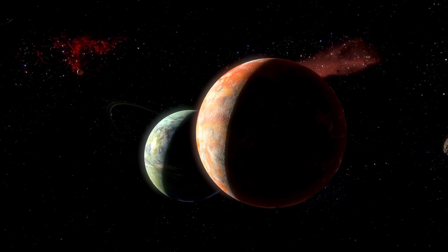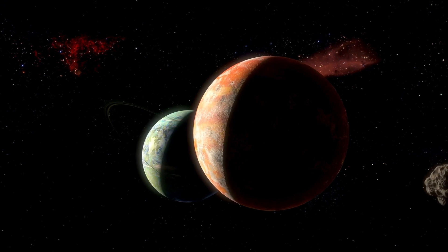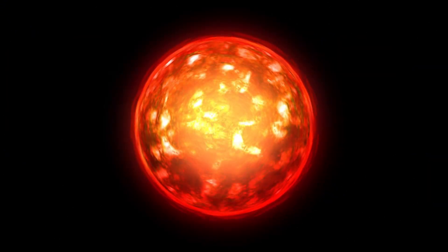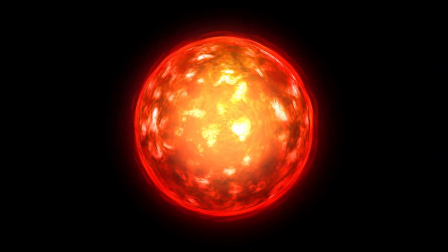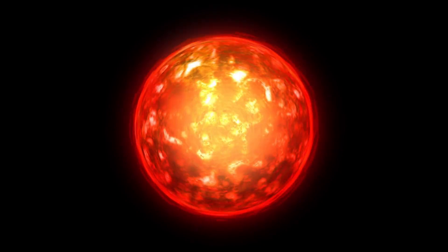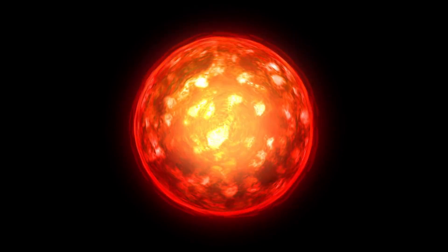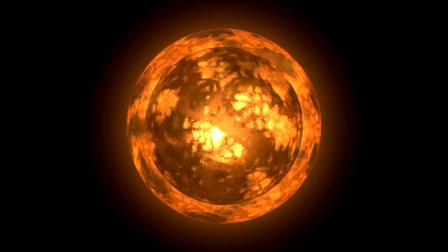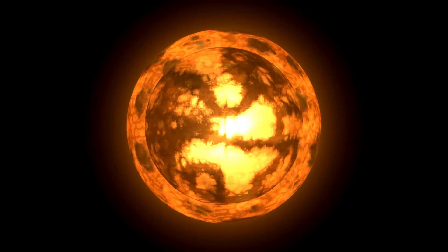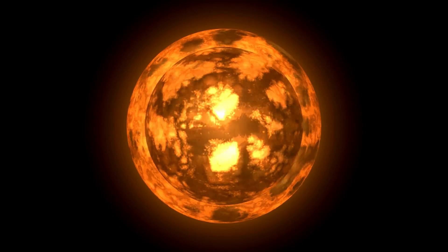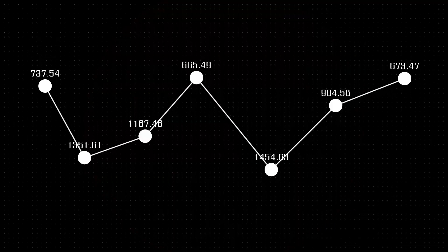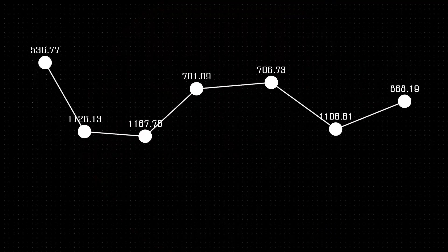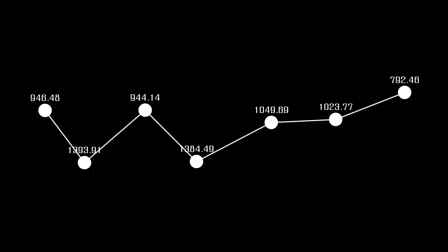At certain times, Betelgeuse can become quite faint. This is called minimum magnitude. In February 2021, it was reported to present its lowest minimum magnitude in a long time, reaching a magnitude of 1.614. Although this is relatively bright, it is definitely fainter than how we usually observe Betelgeuse. However, brightness is not the only outstanding feature of the star.